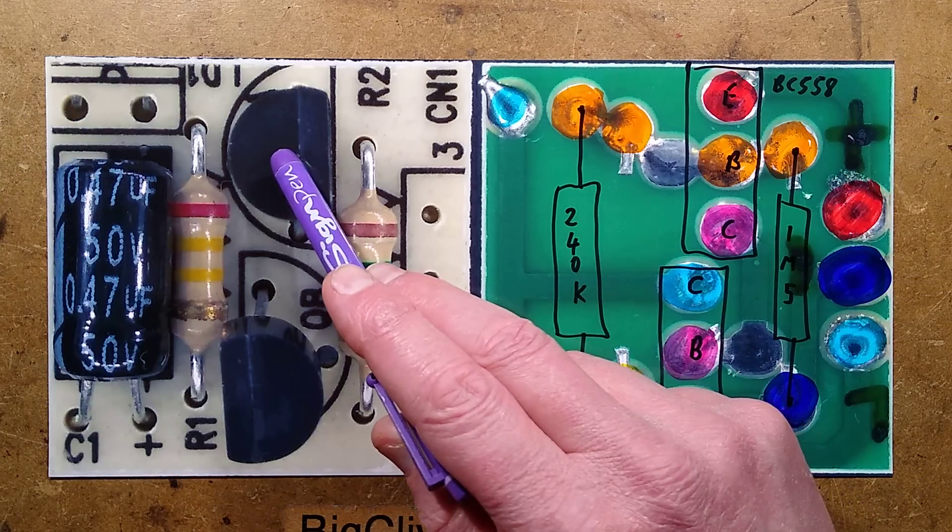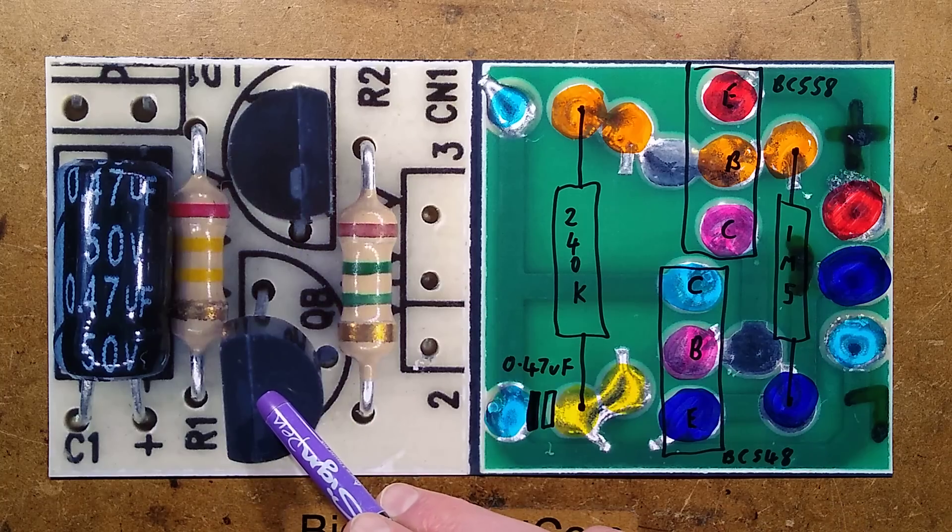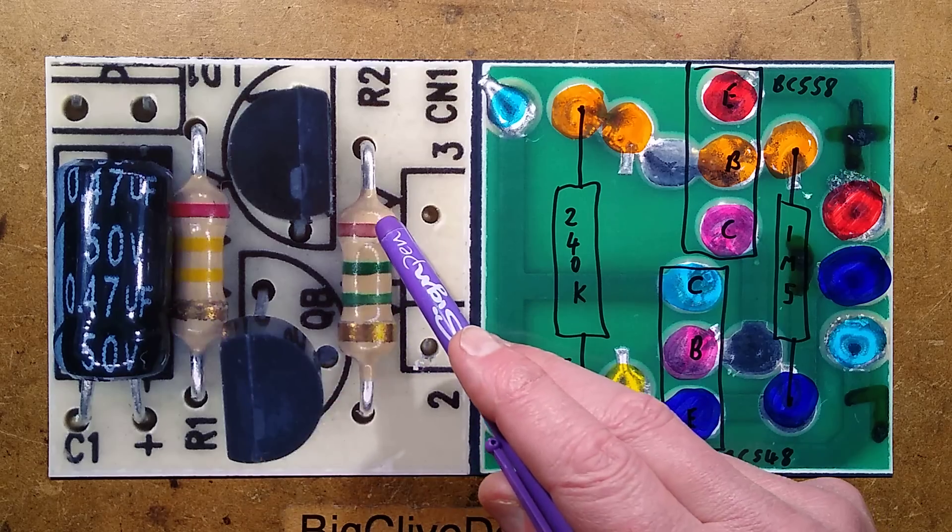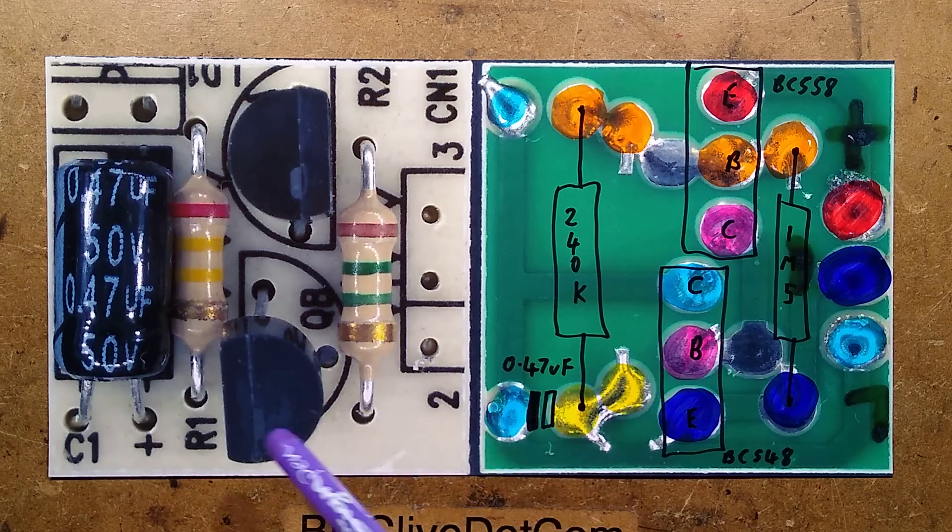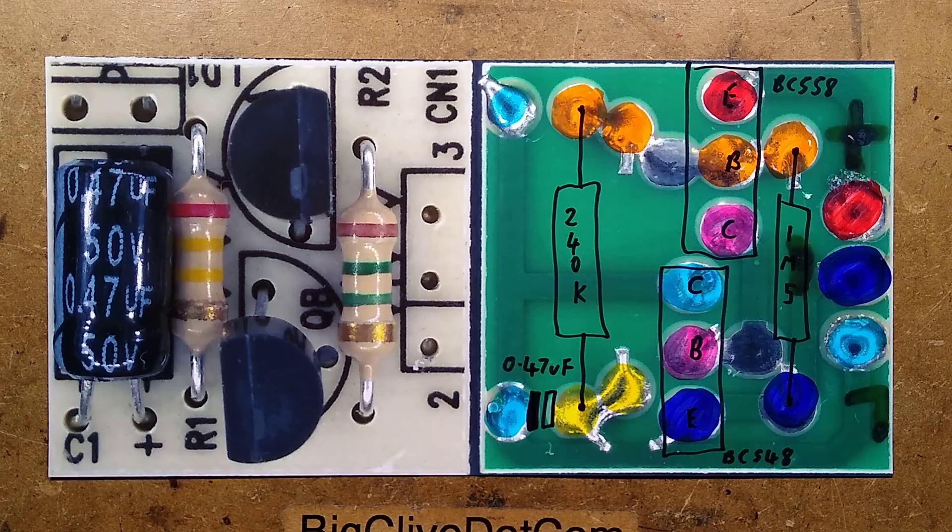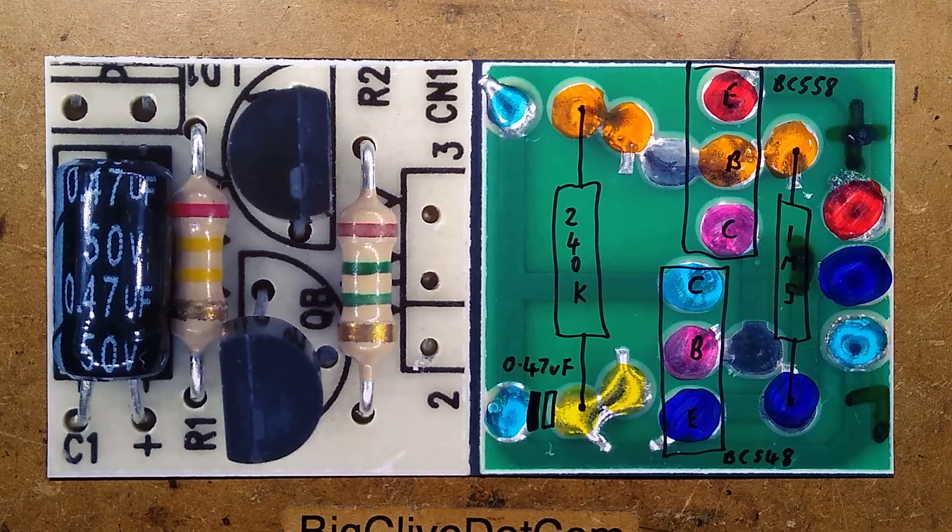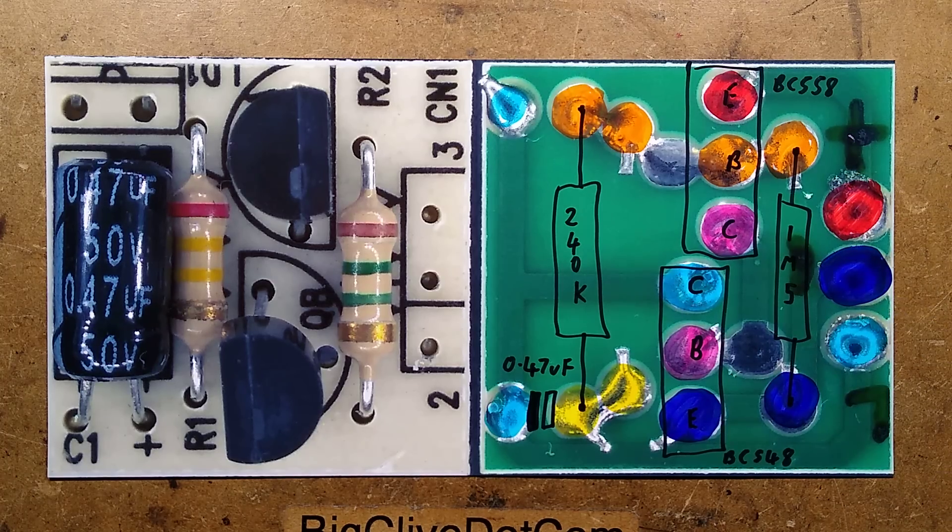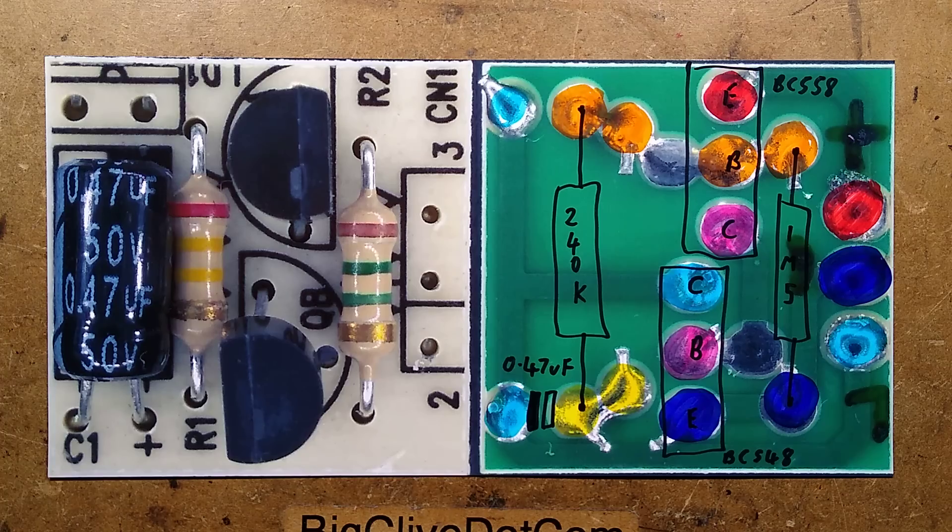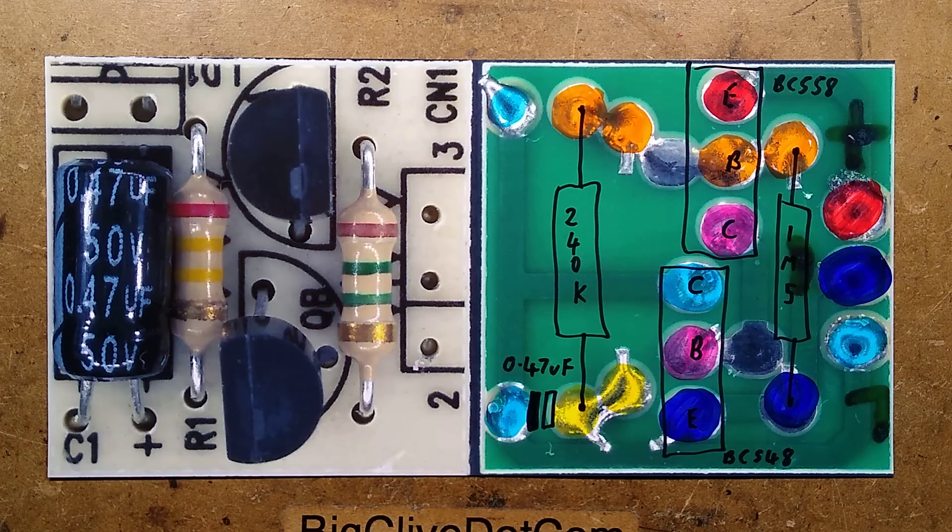So we've got a PNP transistor and an NPN transistor, and we've got two fairly high value resistors - 240k and 1.5 megaohm. We've got a very low value 0.47 microfarad capacitor rated 50 volts. And that is basically it. This is a single-sided board, so what you're seeing here is what you get if you want to try and reverse engineer it yourself. But I've got the schematic here so you can see what it's like.